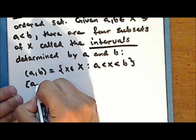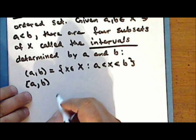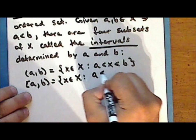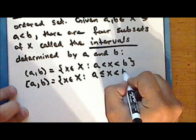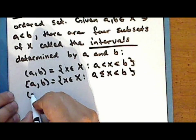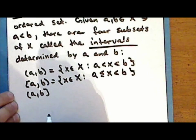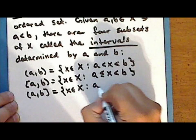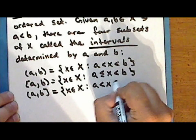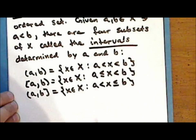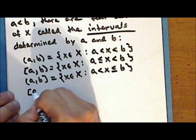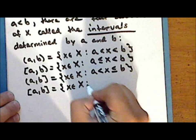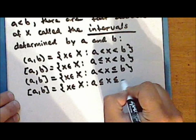What we call the half open interval from a to b inclusive of a, which is the set of all those elements in the set X such that a is less than or equal to x and x is strictly less than b. And what we call the half open interval from a to b inclusive of b, which is the set of all those elements x in the set X such that a is strictly less than x and x is less than or equal to b. And finally, what we call the closed interval from a to b, which is the set of all those elements x in the set X such that a is less than or equal to x and x is less than or equal to b.